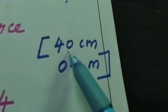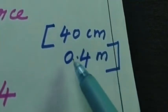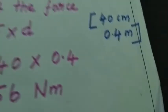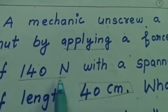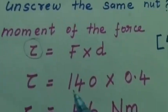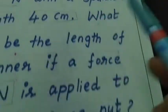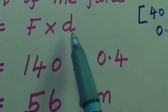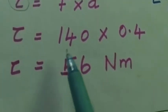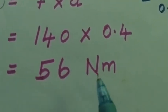40 centimeter we have to convert into meter, so 40 centimeter becomes 0.4 meter. Tau equal to force 140 newton into distance — 40 centimeter changes to 0.4 meter — so we substitute distance d as 0.4 meter. If we multiply both terms we get tau equal to torque equal to 56 newton meter.